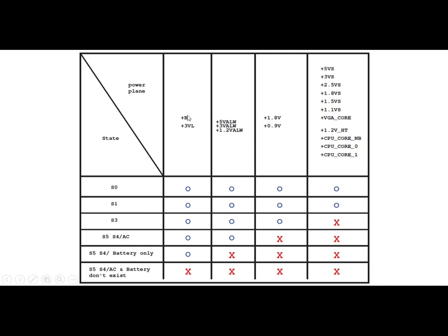We have B+, basically B+ is the main power for any laptop, equal to 19 volts, usually 19 volts. We have the plus 3VA, we have the 5 volt and 3 volt always, and also we have 1.2 always, and we have 1.8 volt and 0.9 volt.